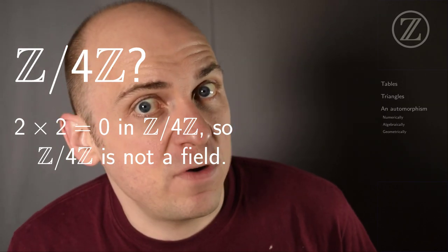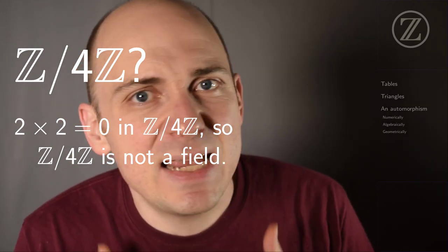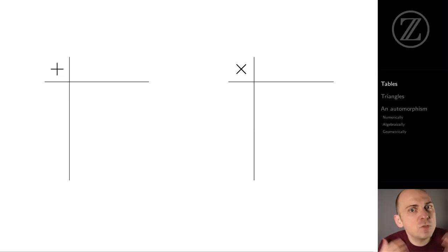But there is a field of order 4. That is, there is a field with 4 elements. It just isn't built by taking the integers modulo 4. So let's build an addition and multiplication table for a field of order 4.